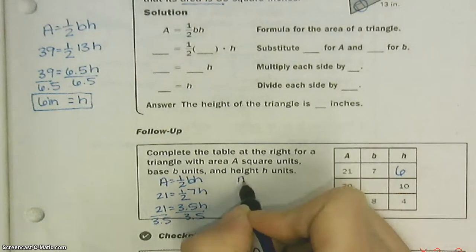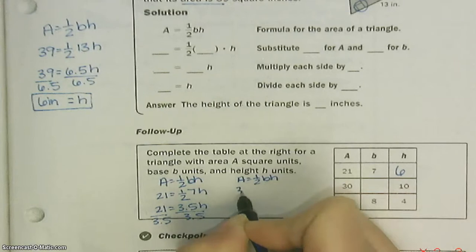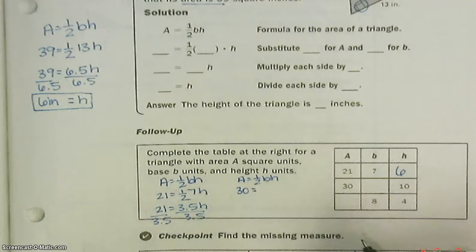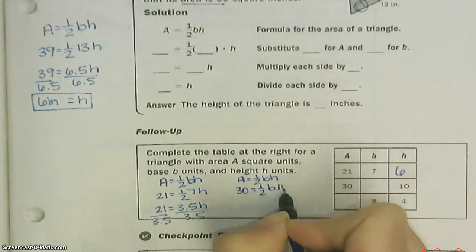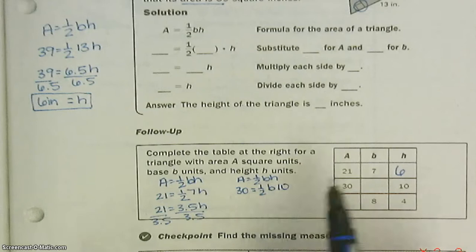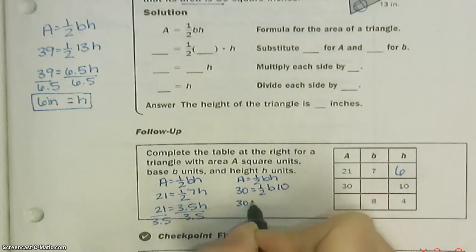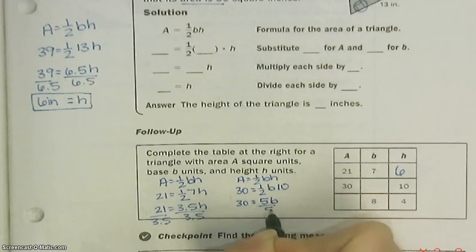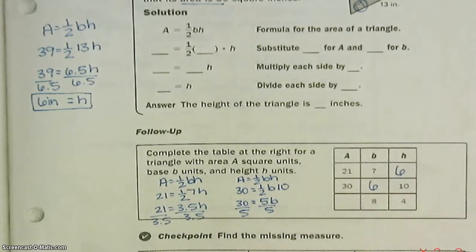Now let's try this one: area equals one-half the base times the height. The area is thirty. I leave my one-half; I don't know my base, but I know my height is ten. You can multiply in any order, so let's do half of ten right now. Thirty equals five times B. Divide both by five — we get six again. It's a coincidence.